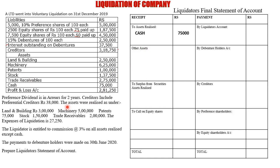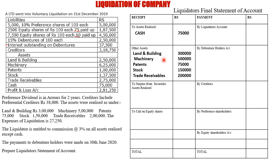Next, all realized assets come under the heading 'other assets.' The assets were realized as: land and building 3 lakhs, machinery 5 lakhs, patent 75,000, stock 1 lakh 50,000, and trade receivable 2 lakhs. We note down all those assets under 'other assets' with their respective amounts.